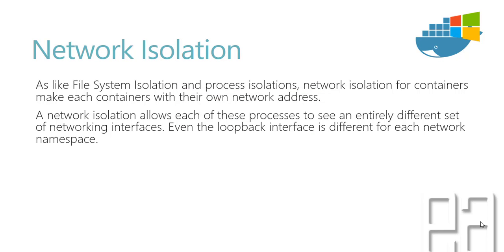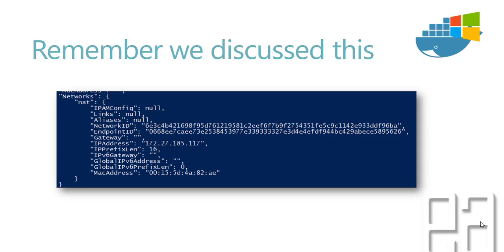When you link different containers, network isolation plays a very important key role. Containers are completely separate entities, like separate virtual machines running on Docker, and we want to make sure that these containers use their own network addresses. Network isolation does a great job there. There is also a virtual DNS manager in Docker so that you can give a specific name for the network address of each container.